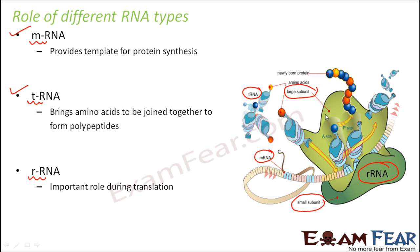The larger subunit of the ribosome acts as an enzyme — a ribozyme — which catalyzes the peptide bond formation, that is the bond formation between the amino acids. The tRNA brings the amino acids to the larger subunit of ribosomes. Each of the tRNA carries an amino acid, and bond formation takes place between all the amino acids — this is how a protein is formed. This bond formation takes place in the larger subunit of ribosome, and the enzyme ribozyme helps to catalyze the peptide bond formation.